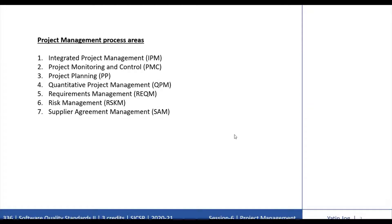The project management process areas cover the project management activities related to planning, monitoring, and controlling of the project. There are 7 project management process areas in CMMI development.